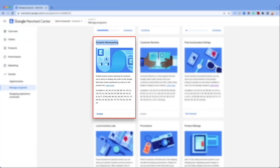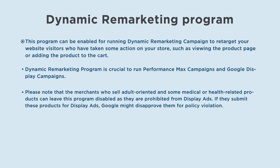Let's move on to the Dynamic Remarketing program. You can enable this program simply by clicking on enable. This program can be enabled for running dynamic remarketing campaigns to retarget your website visitors who have taken some action on your store, such as viewing the product page or adding the product to the cart. Dynamic Remarketing is crucial to run Performance Max campaigns and Google Display campaigns.